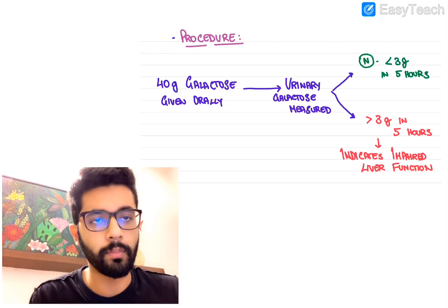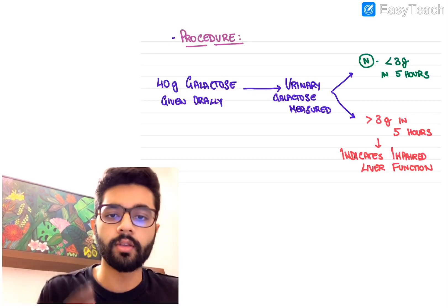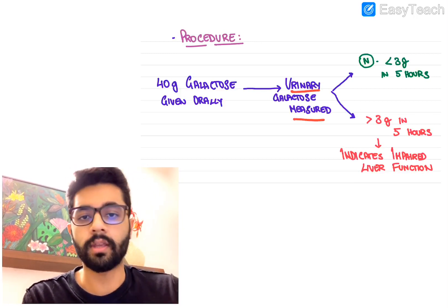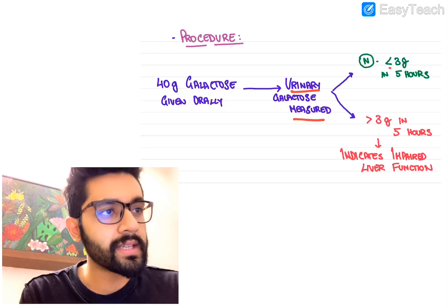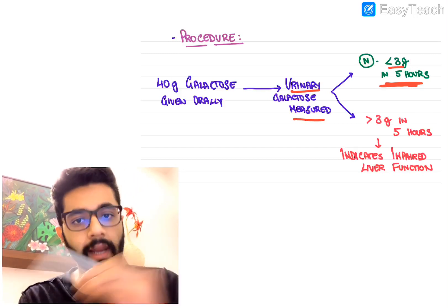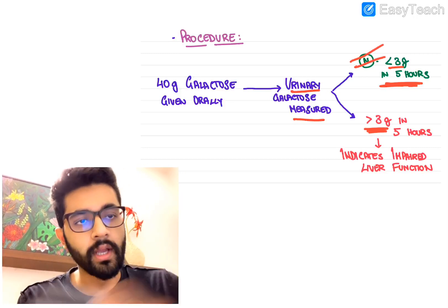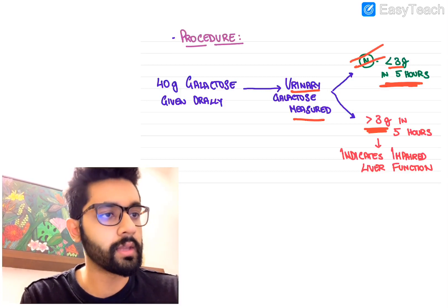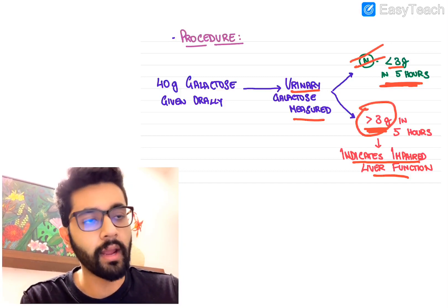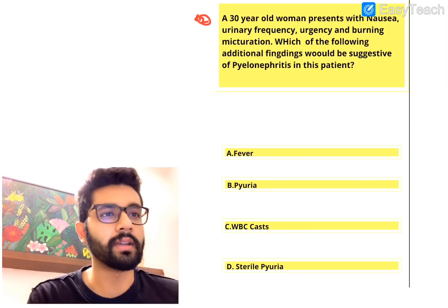The numbers are not too important; the principle is more important. You give 40 grams of galactose orally - sometimes intravenously but usually orally - then take serial urinary samples over the next few hours. If there is less than 3 grams of galactose in urine in 5 hours, it's normal. More than 3 grams after 5 hours indicates impaired liver function.